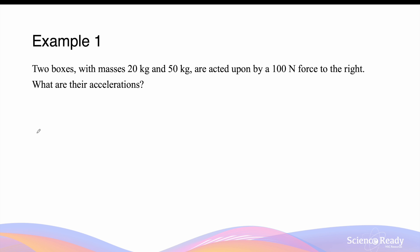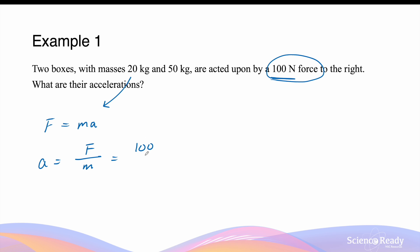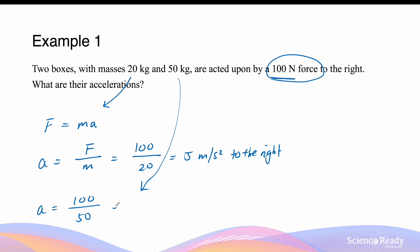Let's go through a few examples of Newton's second law. We have two boxes with masses 20 kg and 50 kg, both acted upon by a 100 N force towards the right. For the 20 kg mass, acceleration equals force divided by mass, so 100 N divided by 20 kg, which is 5 m/s² to the right. Similarly, for the 50 kg mass, the acceleration is 100 N divided by 50 kg, which is 2 m/s² to the right.